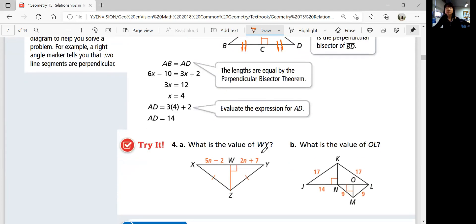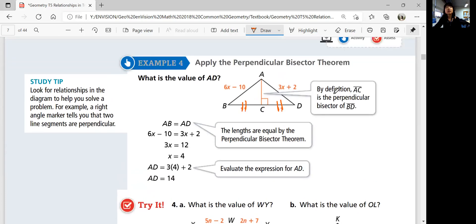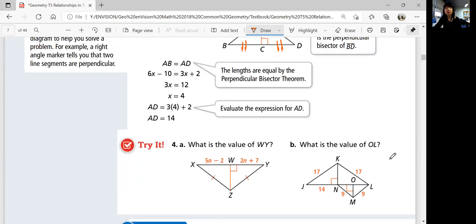See if you can find the value of WY using the perpendicular bisector theorem. Do you know if there are two congruent lines? Or if you do not know, if the information is not enough, you can just say it's not enough. But it's going to be enough for both A and B. So if you can solve it by yourself, come back for answers.